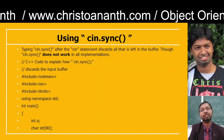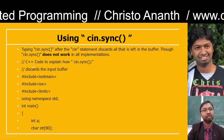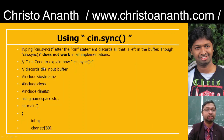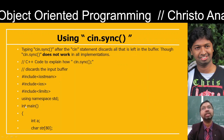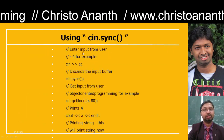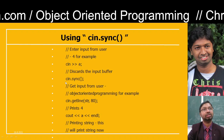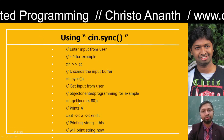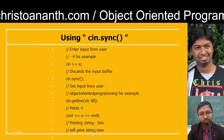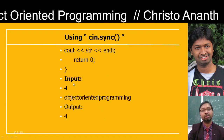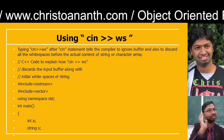Then you will have cin.sync() function, which discards all that is left in the buffer — though it does not work in all implementations. C++ code: #include iostream, #include ios, #include limits, using namespace std, in main function. int a, character string of 80. Enter input from user: cin >> a, then include cin.sync(). Then cin.getline(str, 80). That is going to print 4, then cout a and cout str — return 0. In the input if you give 4 and then 'object oriented programming', you will get the output as only 4 — that is what cin.sync discards from the buffer.